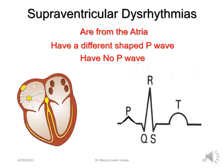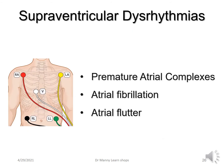If we look at supraventricular dysrhythmias, these are rhythms from the atria, and they have a different shape P-wave, or they may have no P-wave at all. The supraventricular dysrhythmias and arrhythmias we're going to look at are PACs — premature atrial complexes — atrial fibrillation, and atrial flutter.